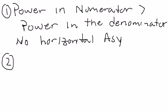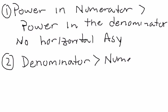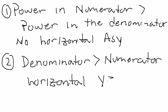If the power in the denominator is greater than the power in the numerator, then you have a horizontal asymptote at y equals 0. Those two are not very common.